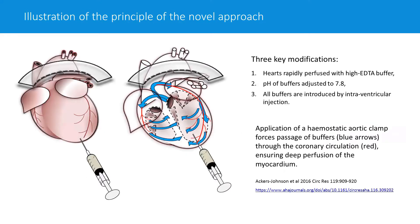We decided to develop a simpler methodology for isolation of cardiac myocytes, which relies on the application of a hemostatic aortic clamp, then forcing buffers through the coronary circulation by putting a syringe into the left ventricle. With the aorta clamped, the only path for those buffers is through the coronary circulation, ensuring deep perfusion of the myocardium. This method was published in 2016 and has since been taken up by several labs.